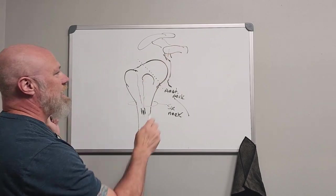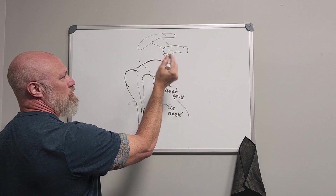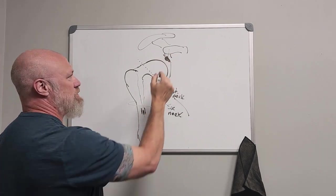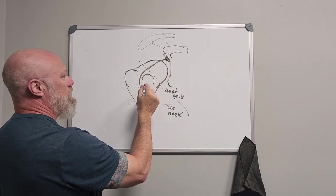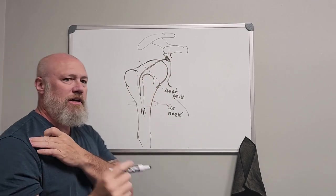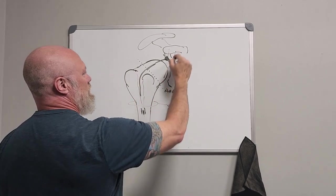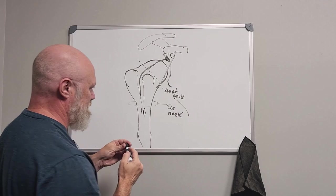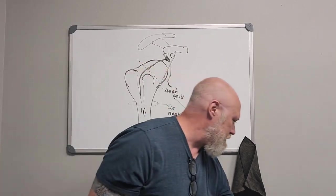At this supraglenoid tubercle, you're going to have a structure called the long head of the biceps brachii. That long tendon is going to run and dip down between the greater and lesser tubercles in that intertubercular groove. That's where the long head of your bicep sits, and the short head of course coming from the coracoid.